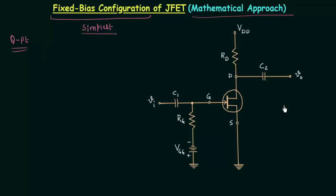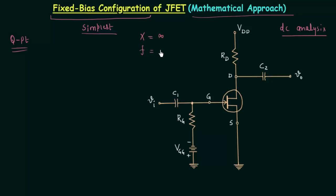We have to perform DC analysis of this circuit, and because of this we can simplify the circuit further. C1 and C2 are the coupling capacitors, and the reactance offered by C1 and C2 for a DC signal is equal to infinity, because the frequency of a DC signal is equal to 0 Hz. Due to this reason we can open-circuit C1 and C2.